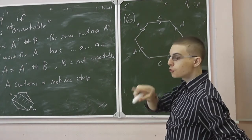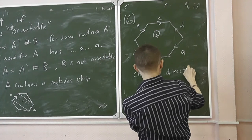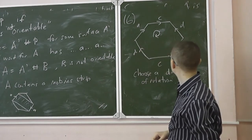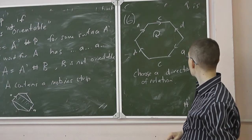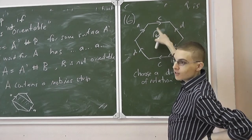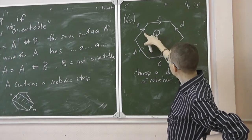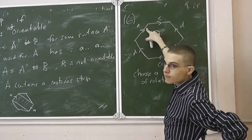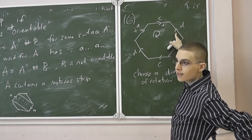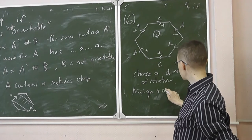Another way to think of orientability: you choose a rotational direction on your gluing diagram — either clockwise or anti-clockwise. As you go around the boundary edges, give it a plus if you're going clockwise and matching the orientation. For example, this arrow is going the same way as this arrow — give it a plus. This one's going the opposite way — give it a minus.